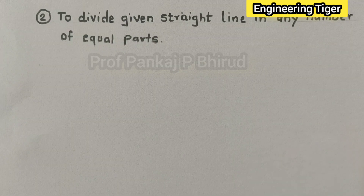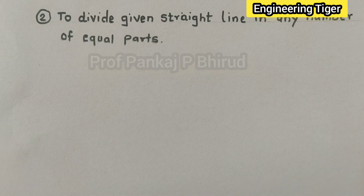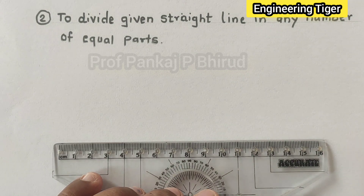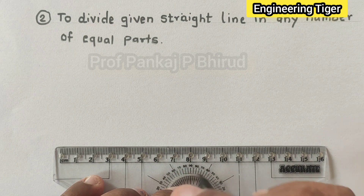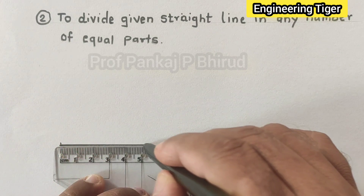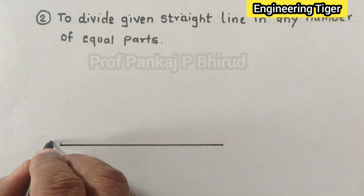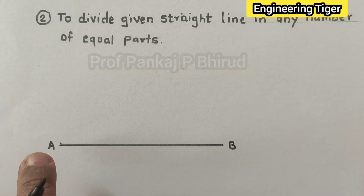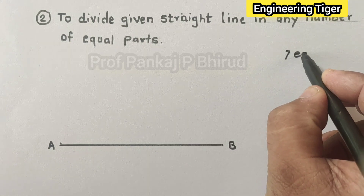The second construction is to divide a straight line into any number of equal parts. Let us draw a straight line again with 100 mm — line AB — and we have to divide this line AB into seven equal parts.